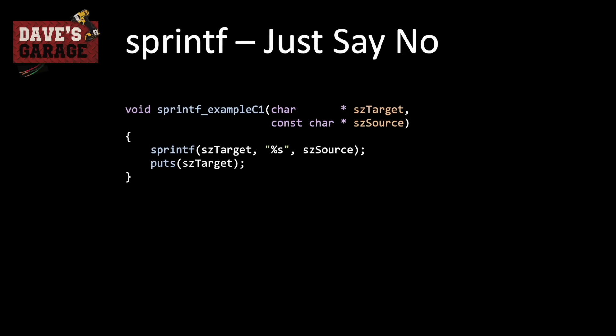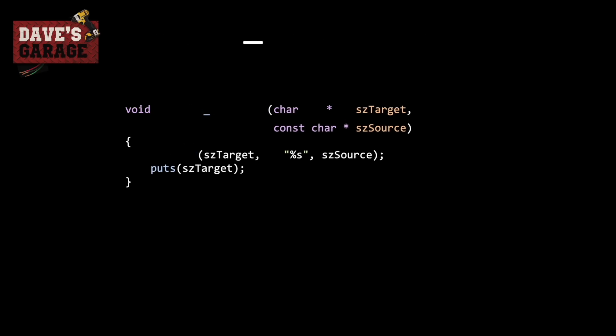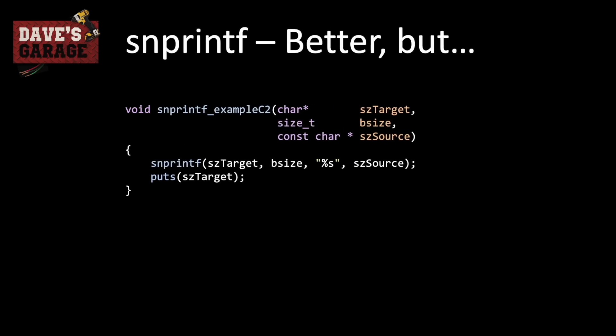Next, we turn our attention to sprintf. sprintf is very much like your standard printf function, except instead of writing to the output it writes its characters to a string. By now you can probably see that the obvious problem is that if your source string is longer than your target string, it's going to overflow the buffer and crash. Our first attempt might be to switch to snprintf — however, there are problems there as well.